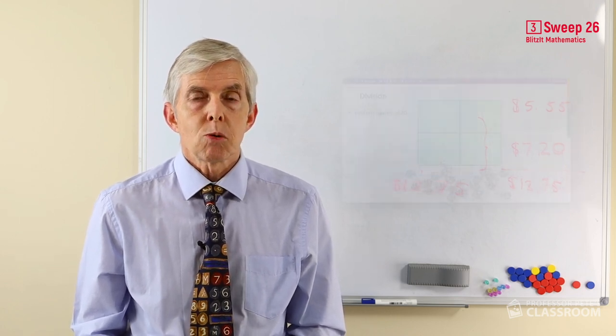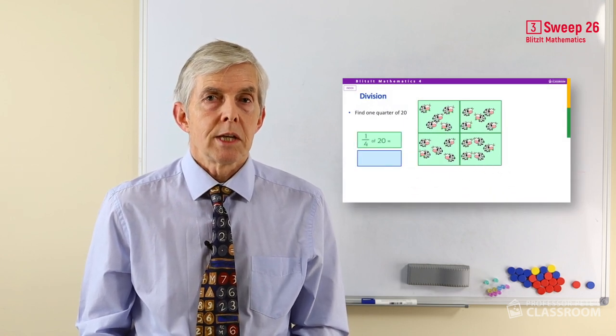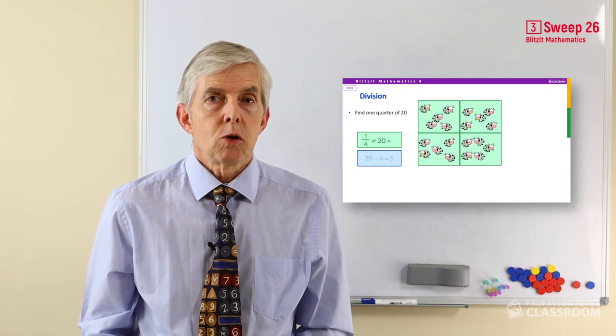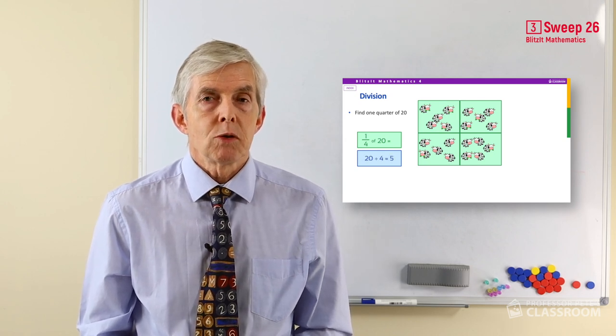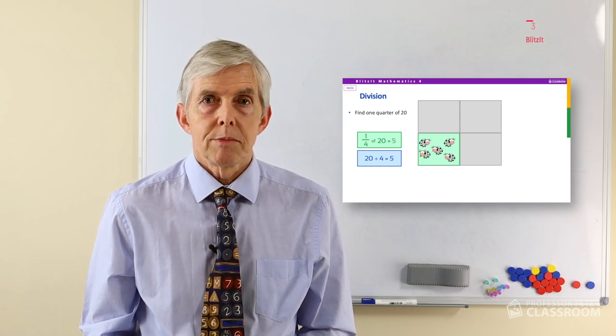So let's say what is 20 divided by four or what is one quarter of 20? Of course, the answer is five. And that links, of course, with known number facts, four times five and 20 divided by four. That's it for this sweep. See you again soon.